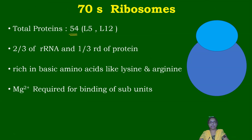The 70S ribosome contains a total of 54 proteins. The smaller subunit has 21 proteins and the larger subunit has 31, which adds up to 52. The extra 2 come from duplicate copies of L5 and L12 proteins, each present in two copies, giving 54 ribosomal proteins total.